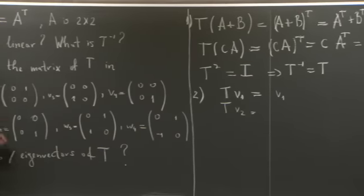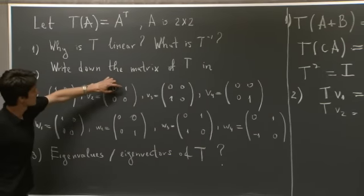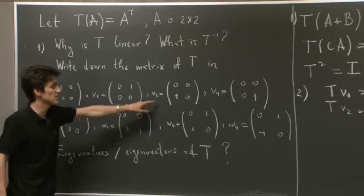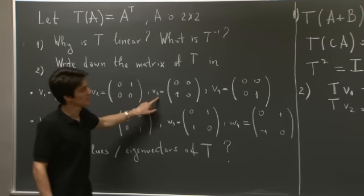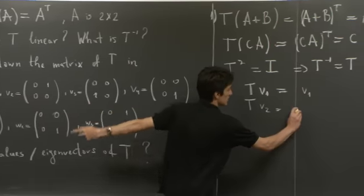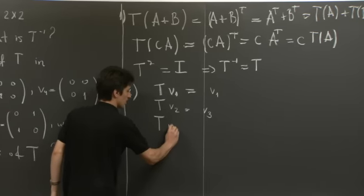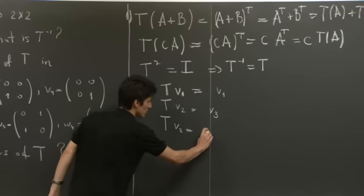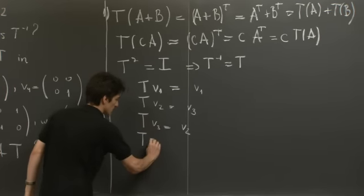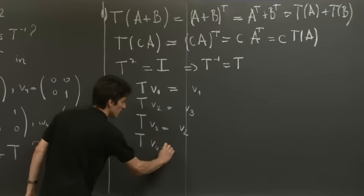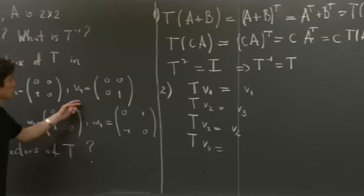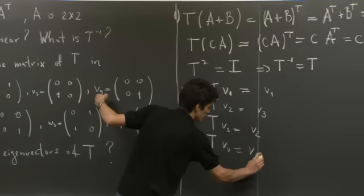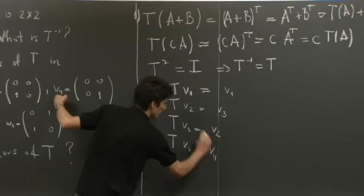What about T of V2? Again, we come back here. So this one comes here. 0 comes here. And so we actually get V3. So T of V2 is V3. Similarly, T of V3 is V2. And finally, T of V4. Well, V4 is a symmetric matrix as well. So the transpose doesn't change it.